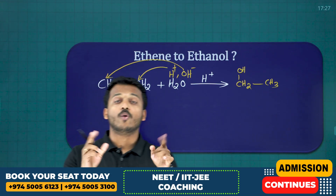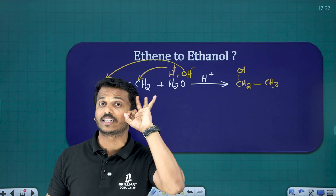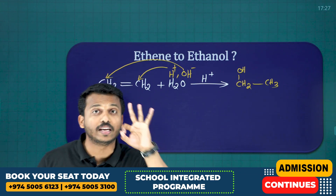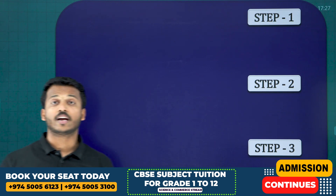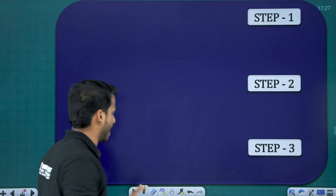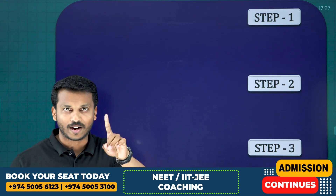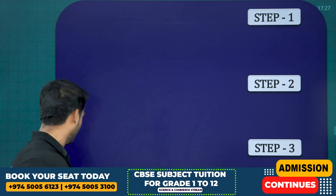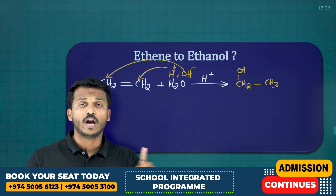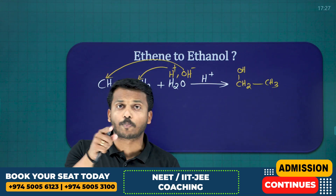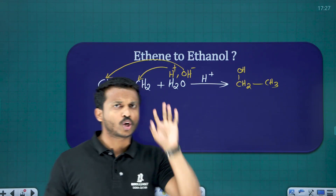We have to write the mechanism of this reaction — it's a three-mark question because there are three steps. Before going to main step number one, there is one minor step. What is actually added in the beginning? H₂O with H⁺. H₂O combined with H⁺ gives H₃O⁺ — the hydronium ion.